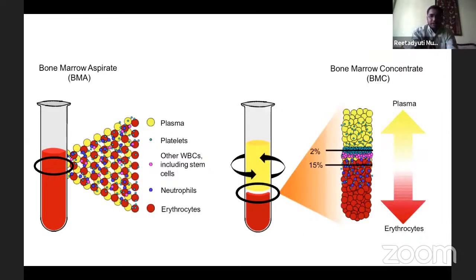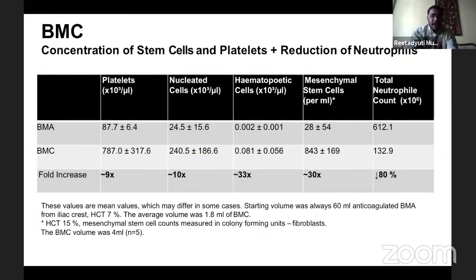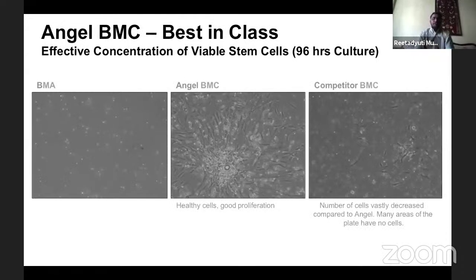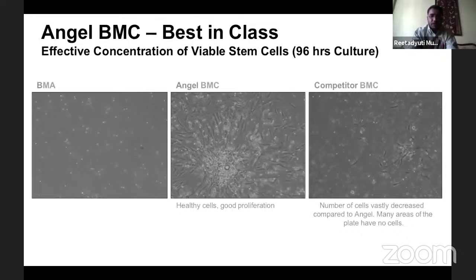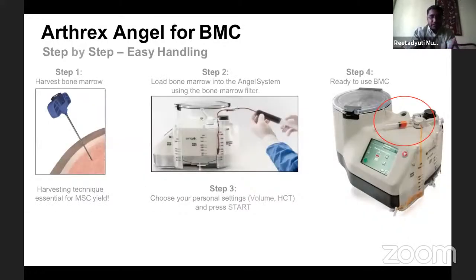Bone marrow aspirate when centrifuged at high speed produces a concentrate with several times higher mesenchymal stem cell content than the primary aspirate. Dr. Mukhopadhya notes that one particular brand showed relatively higher proliferating BMAC than competitors, though further evaluation is needed. The bone marrow can be aspirated from the iliac crest or tibial condyle.